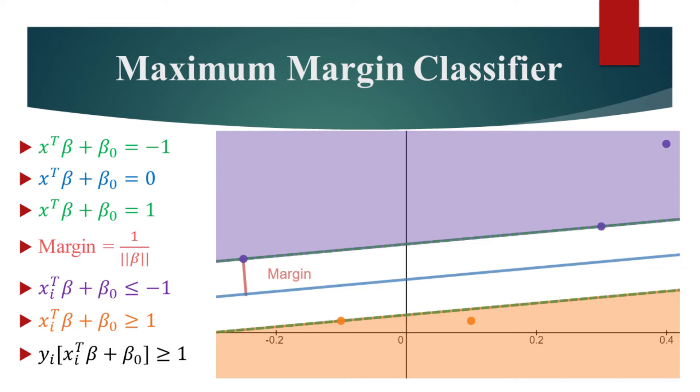We want to maximize the margin with the constraints that the data labeled as minus 1 ends up on one side of the decision boundary outside or on the margin, and the data labeled as 1 ends up on the other side of the decision boundary outside or on the margin. These constraints can be written in a single inequality.